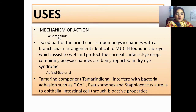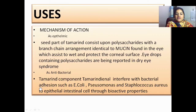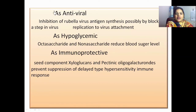Regarding the mechanism of action as an ophthalmic agent: the seed part of tamarind consists of polysaccharides with a branched arrangement identical to mucin found in the eye, which helps to wet and protect the corneal surface. Eye drops containing these polysaccharides are being studied. As an antibacterial, tamarind is effective against bacteria such as E. coli, Pseudomonas, and Staphylococcus aureus on intestinal epithelial cells through bioactive properties. As an antiviral, it works through inhibition of rubella virus antigen synthesis, possibly by blocking a step in virus replication or virus attachment. It is also hypoglycemic — oligosaccharides and non-saccharides reduce blood pressure level.